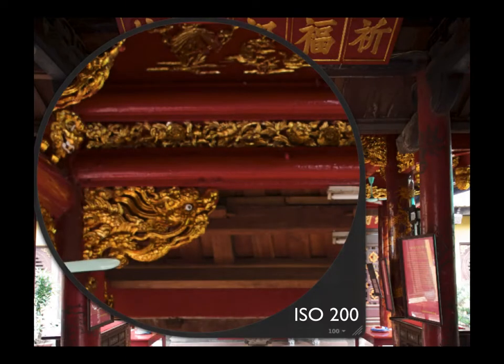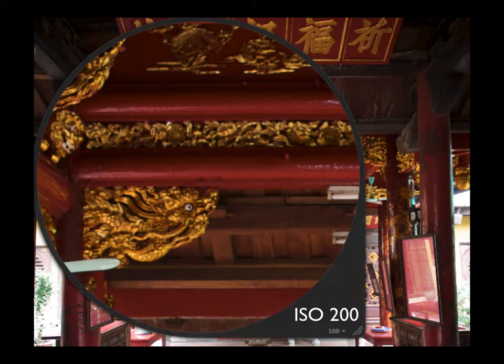I'm going to use this loop tool to zoom in on part of the image. This one is ISO 200, and I had a really slow shutter speed here — about a twentieth of a second — so you can see why I might want to increase that shutter speed. I really want you to concentrate on the red part above that golden drag in there as we go up.